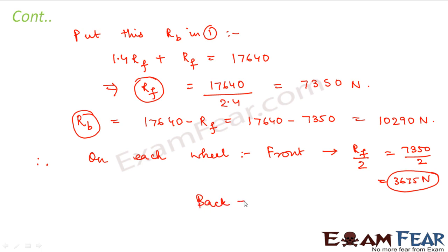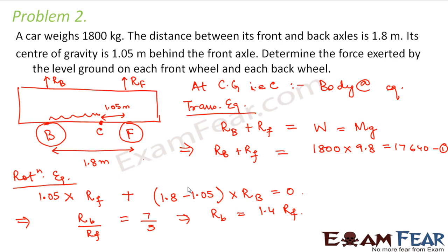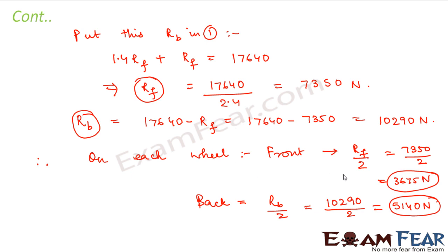Since there are two front wheels and two back wheels, the force on each front wheel is Rf / 2 = 7350 / 2 = 3675 N, and the force on each back wheel is Rb / 2 = 10290 / 2 = 5145 N. Rb and Rf represent the total force applied by the ground on both back wheels and both front wheels respectively, which is why we divide by 2 to get the per-wheel force.